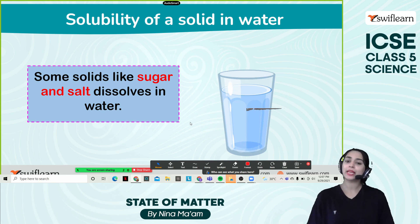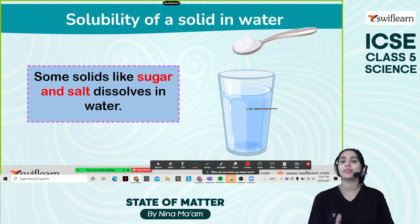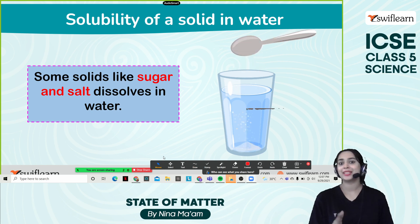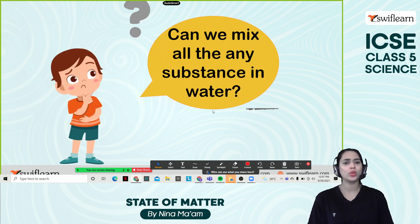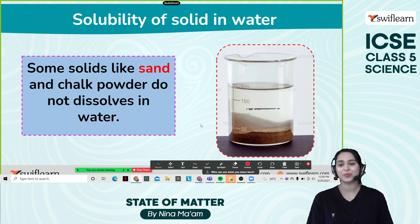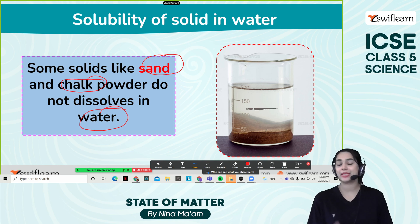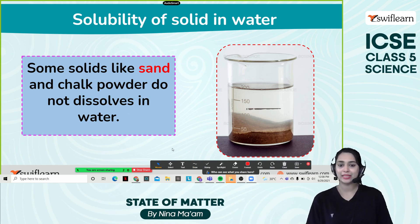Some solids like sugar and salt dissolve in water very quickly. But what about other substances like wooden particles and sand? Can we mix any substance in water? No. Some solids like sand and chalk powder do not dissolve in water. We mix water with the sand, but it didn't dissolve at all. So that means the solubility is less.